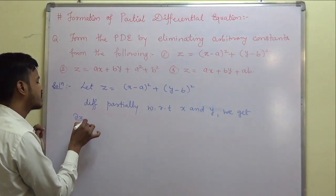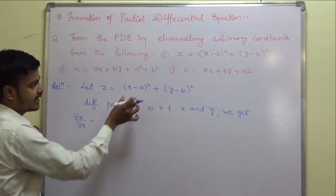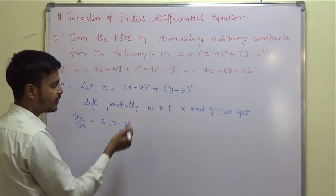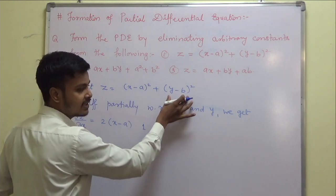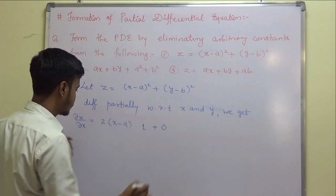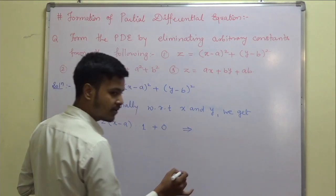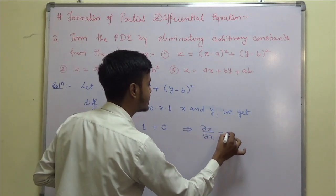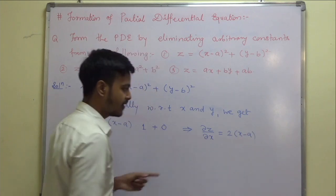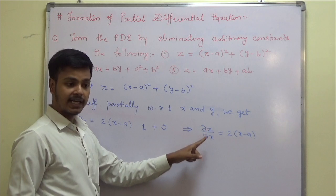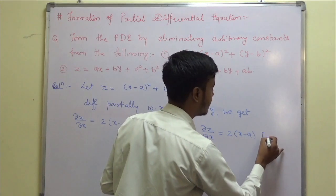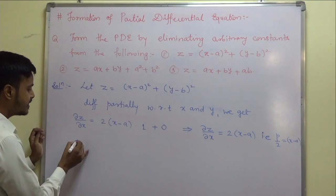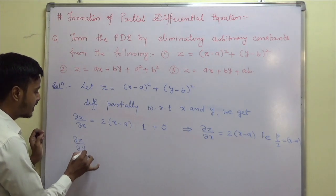First, differentiating with respect to x: del z by del x — is there a term of x? Yes. So we get 2 times (x minus a) into 1, and for the y term there is no x, so derivative is 0. Therefore del z by del x equals 2(x minus a). Remember the notation: del z by del x is called p. So p by 2 equals (x minus a).